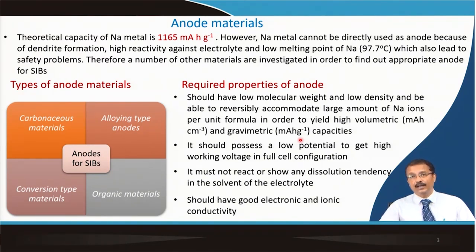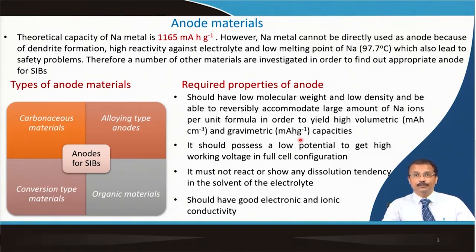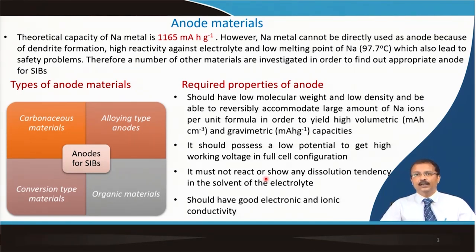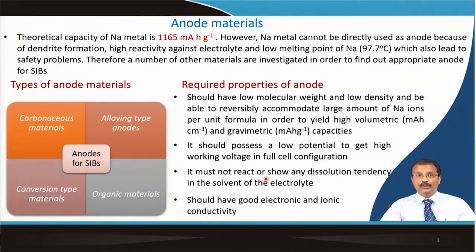Most sodium ion cathode materials lie around 3.3 to 3.8 volt. So you need an anode material with a much lower potential so that the voltage window is at least 3 volts — there would not be any 5-volt sodium ion cathode material. The material should not react with or dissolve in the electrolyte, to avoid losing active material and reducing capacity over cycles. It should also have both sodium ion conductivity and electronic conductivity; obtaining good electronic conductivity is a challenge for many of these materials.